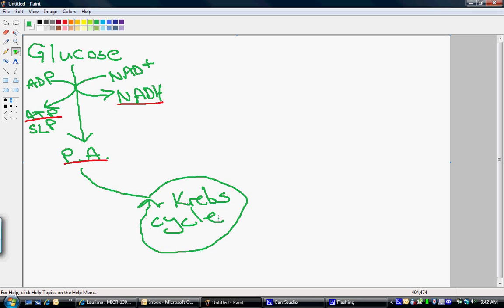And in the Krebs cycle, we have the complete oxidation of glucose. So now we're going to completely strip all the electrons that were in glucose, completely oxidize it, and form mostly NADH.